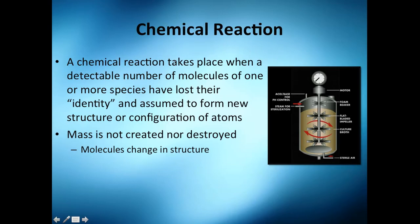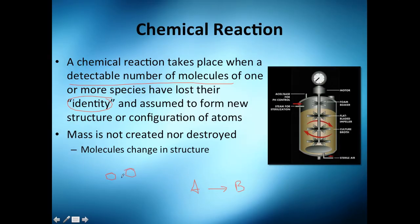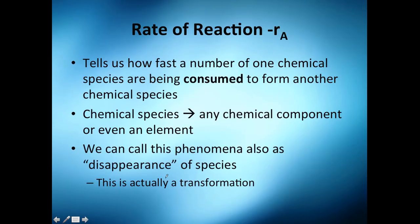Now, to end this video, let's look at what a chemical reaction is. It takes place when a detectable number of molecules of one or more species lose their identity and are assumed to form new structures or configurations of atoms — so A goes to B. As you remember, mass is not created nor destroyed, so the molecules just change; it's just a rearrangement of structures. You can see there are the same atoms in different structures before and after. Before continuing, we're going to see the rate of reaction in the next video — I want to do a special video on that.